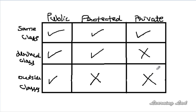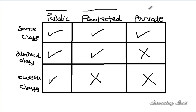Make sure to use the proper access specifier with class members and member functions. If you want members to be available in the class where they are defined, in the derived classes, and also from outside, use the public access specifier. If you want them available only in the class and in the derived classes, use protected. And if you want members or member functions to be available only inside the class where they are defined, use the private access specifier.